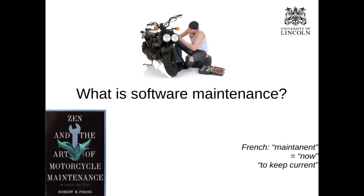Typically, maintenance has two components. One is to update software for the new technical environment — every time your computer, OS, or libraries change, some maintenance may be needed. Secondly, when the social environment around your software changes, you might need to add new features or change the behavior of the software to update for that.